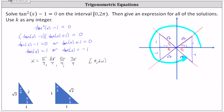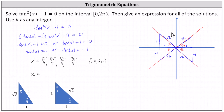Now let's work on an expression for all solutions. Starting at x equals pi over four, we add pi over two to reach the next solution, and that pattern continues — we add pi over two each time to get all solutions. We can express this as x equals pi over four plus pi over two times k, where k is any integer. This gives all solutions.